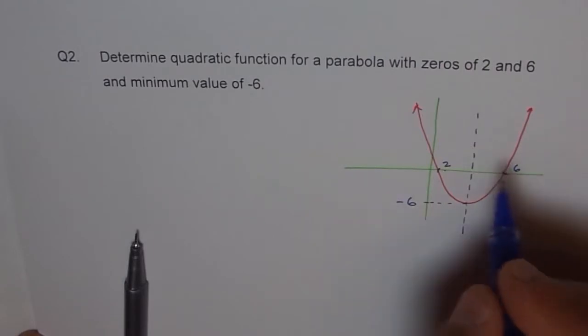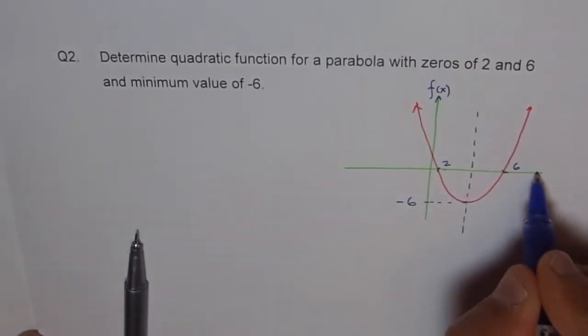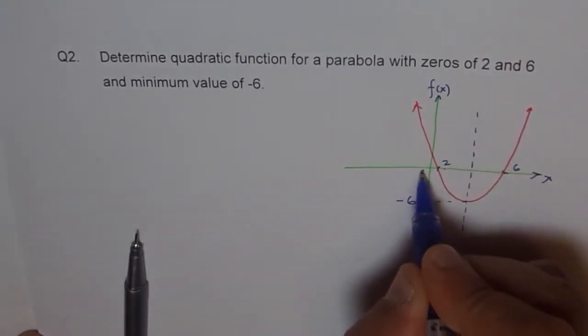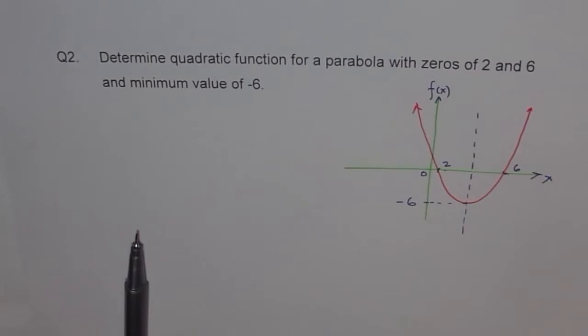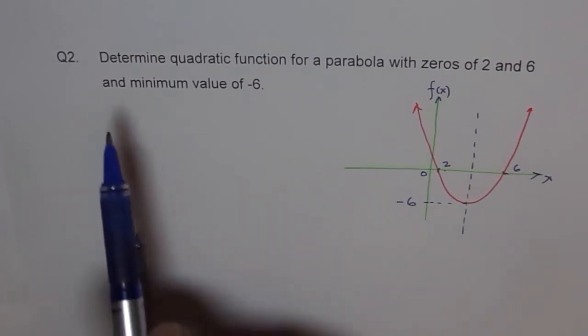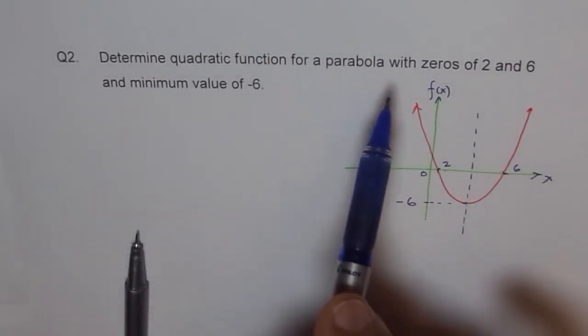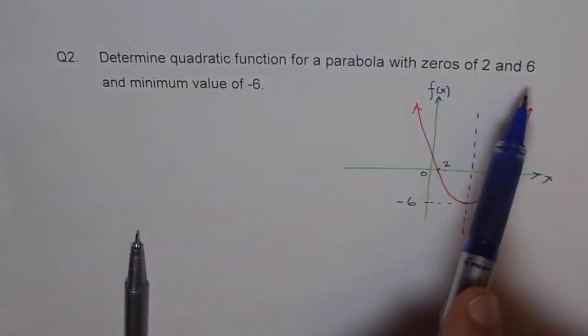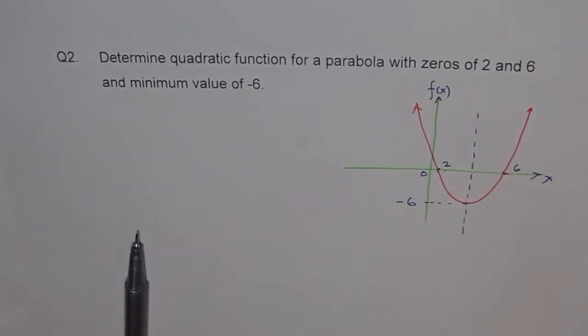So that's my parabola and this is the function f(x) which I am going to find and this is my x-axis with 0 here. It's not to scale but it is just to give you an idea of what we have and what we need to find. So the question again is, determine quadratic function for a parabola with zeros of 2 and 6 and minimum value of minus 6. Now the question is...